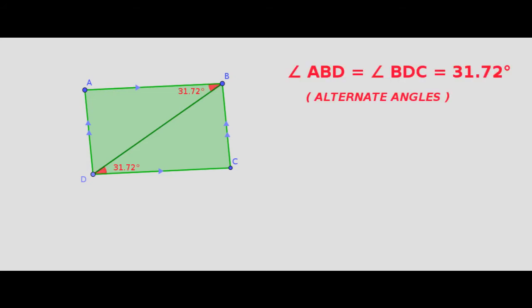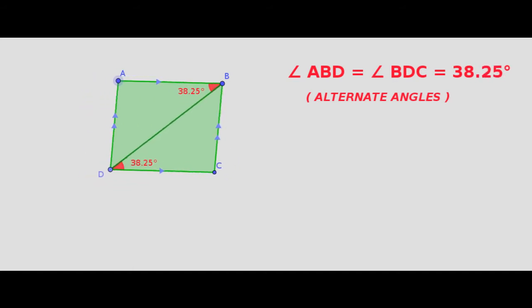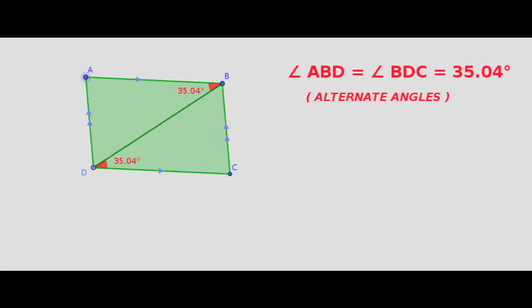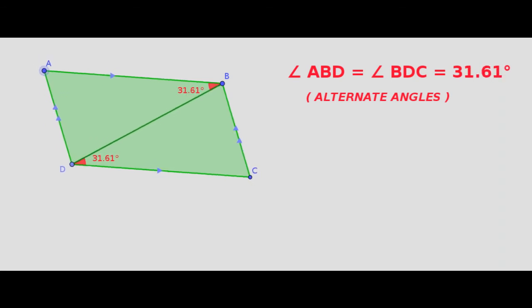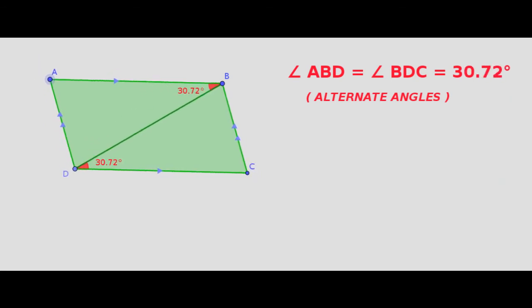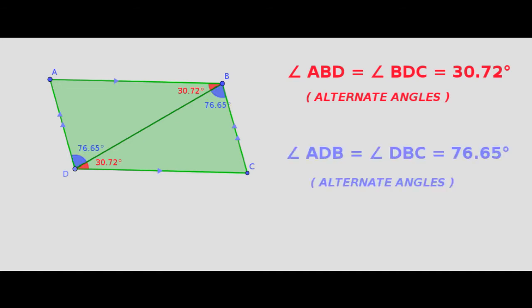Angle ABD is equal to angle BDC — they are alternate angles. When we vary the measurement of the parallelogram, these alternate angles remain equal. Similarly, angle ADB is equal to angle DBC, which are also alternate angles. We can visualize this by varying the measurement of the parallelogram.